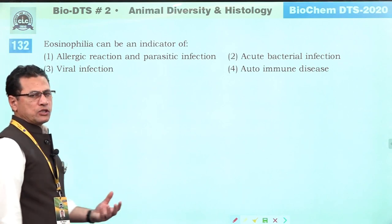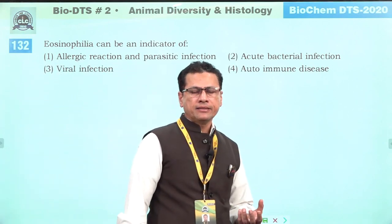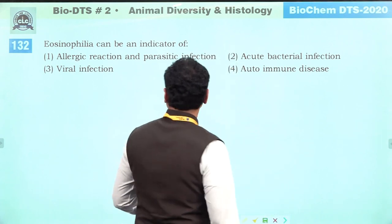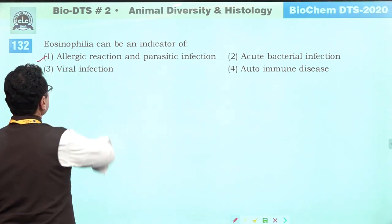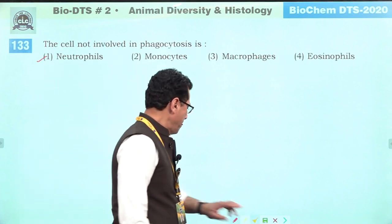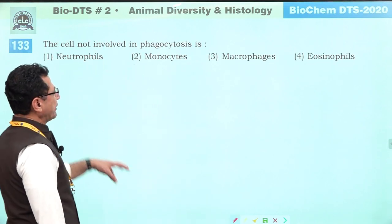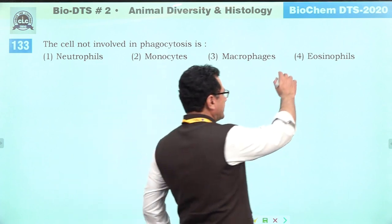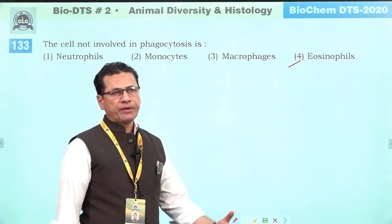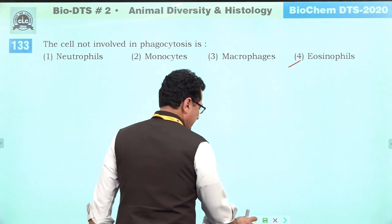Eosinophils are involved in allergic reactions and protect the body from parasitic infections. Answer is one. Eosinophils are the cells not primarily involved in phagocytosis — they are involved in parasitic infections and allergic reactions.